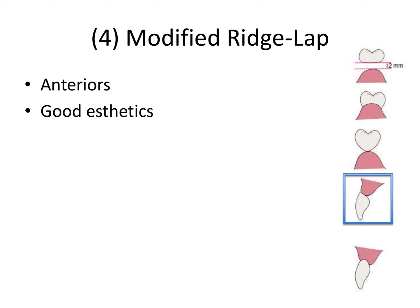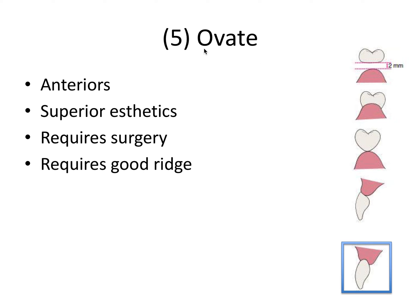The ovate pontic provides the most superior aesthetic design. Used only for anterior teeth, it actually embeds the pontic into a small divot in the soft tissue and ridge that you surgically create. This minor surgery creates the space so the pontic can sit in that divot, appearing to emerge from the soft tissue just as a natural tooth would — what we call the emergence profile. It has the best aesthetics but requires surgery and proper ridge dimensions.